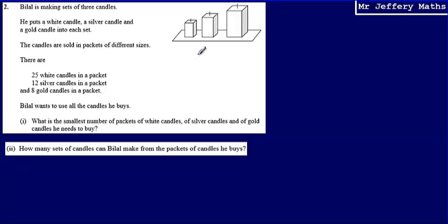This is question two in a series of videos taking a look at the Edexcel practice papers. Here we're told that Bilal is making sets of three candles. He puts a white candle, a silver candle, and a gold candle into each set.